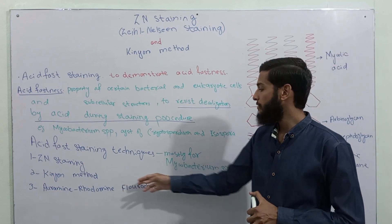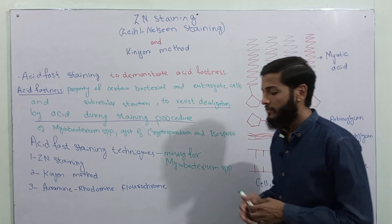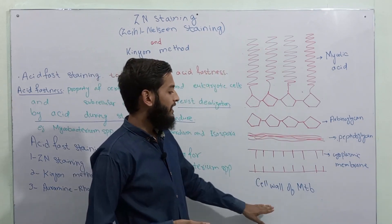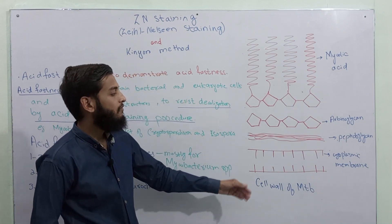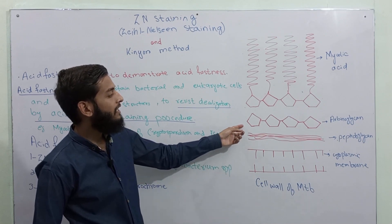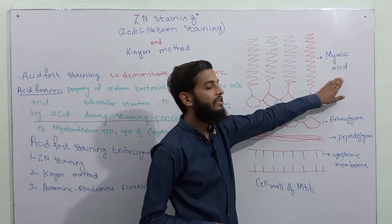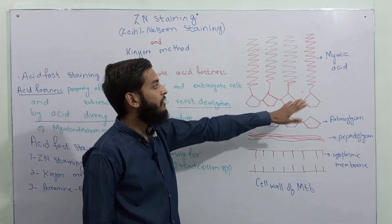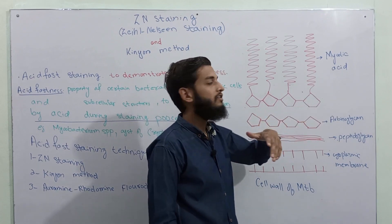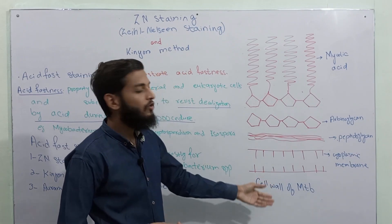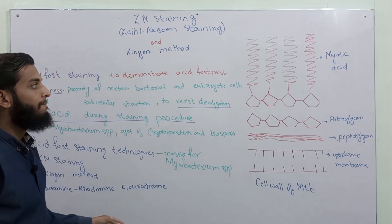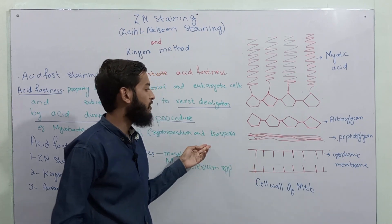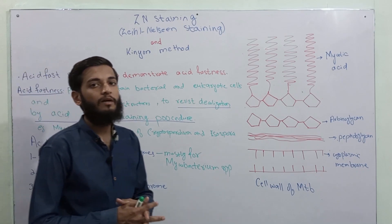Both of these staining techniques are mostly performed for Mycobacterium species. The question is: why are we using these techniques for Mycobacterium? If we look at the structure of the cell wall of Mycobacterium tuberculosis, outside the peptidoglycan there is arabinoglycan, and then mycolic acids. These mycolic acids are a type of lipids that don't allow stain to penetrate inside the cell wall, so mycolic acid is inhibiting the staining procedures. In order to stain the Mycobacterium cell wall, we have developed these methods. The second property shown by Mycobacterium is acid decolorization resistance, which we will talk about in detail.